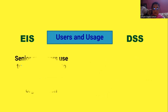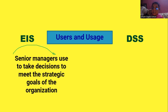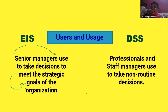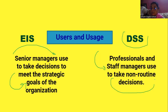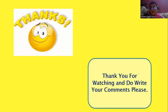Next: users and usage. In EIS, the users are senior managers, and decisions made are strategic decisions necessary for strategic goals. DSS is used by professionals and staff managers at the middle level. It helps handle typical situations and non-routine decisions that emerge from time to time, which are semi-structured in nature. EIS, on the other hand, involves totally unstructured decisions — as we go to the top level of management, decisions become more unstructured. With this, we have covered all the points of differences between EIS and DSS.